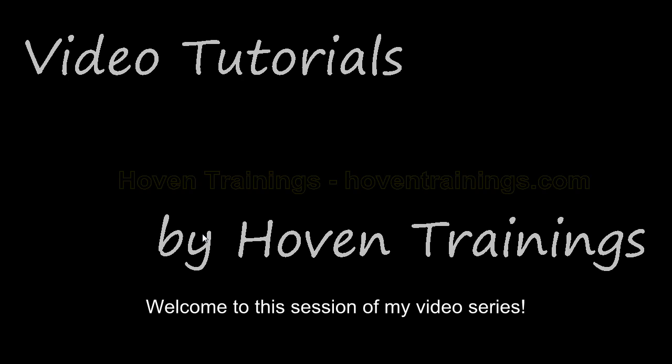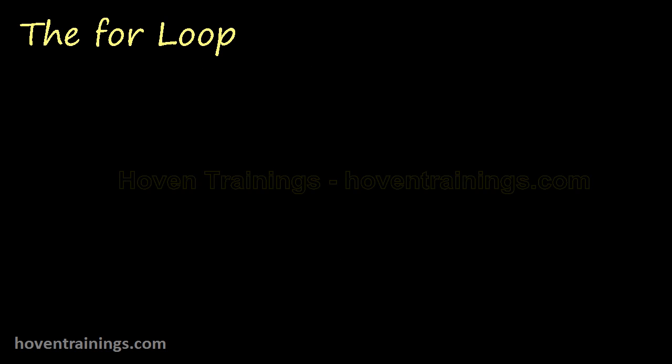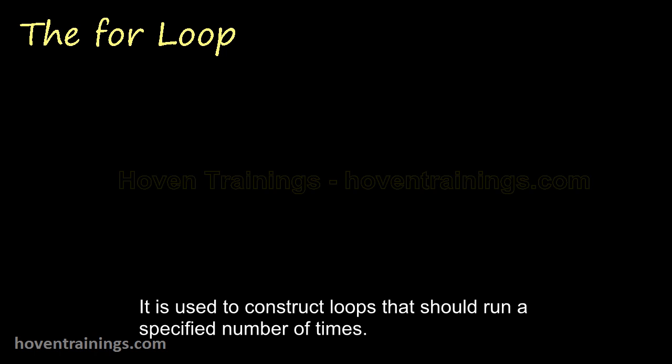Welcome to this session of my video series. For loop is the third type of loop in C. It is used to construct loops that should run a specified number of times.